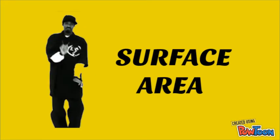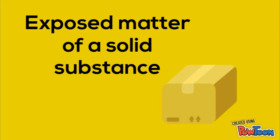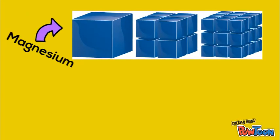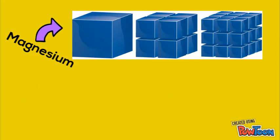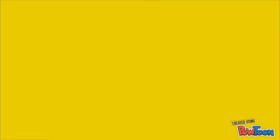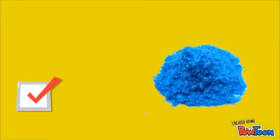First, surface area. Surface area is the exposed matter of a solid substance. Imagine that you are holding a perfect cube of magnesium. The surface area is the sum of the area of all six sides of the cube. The surface area of the cube can be increased by dividing the cube into smaller cubes. Surface area is maximized when a single large cube is crushed to fine powder.